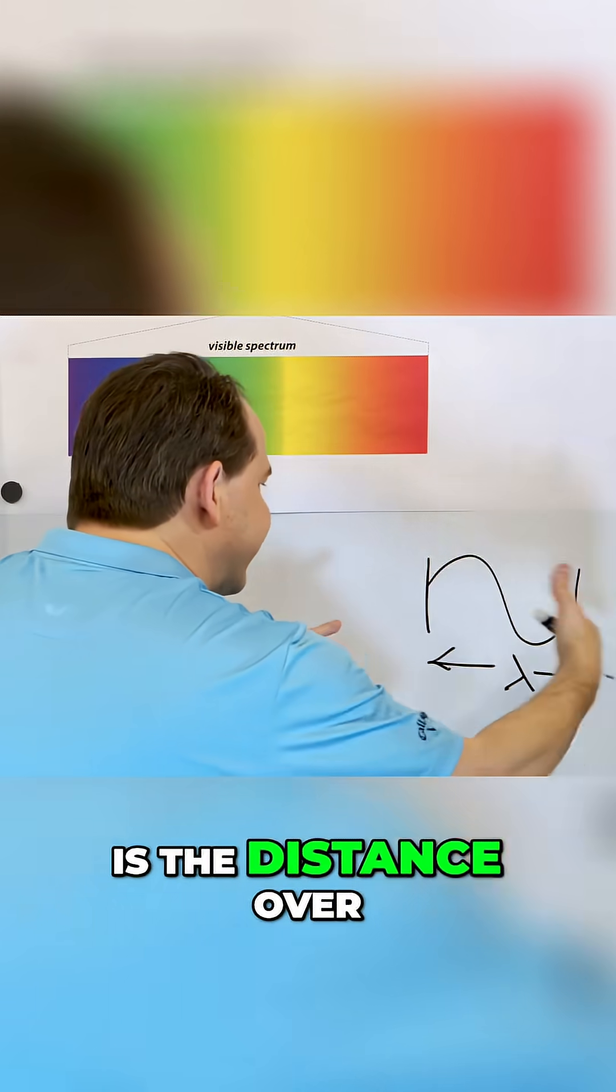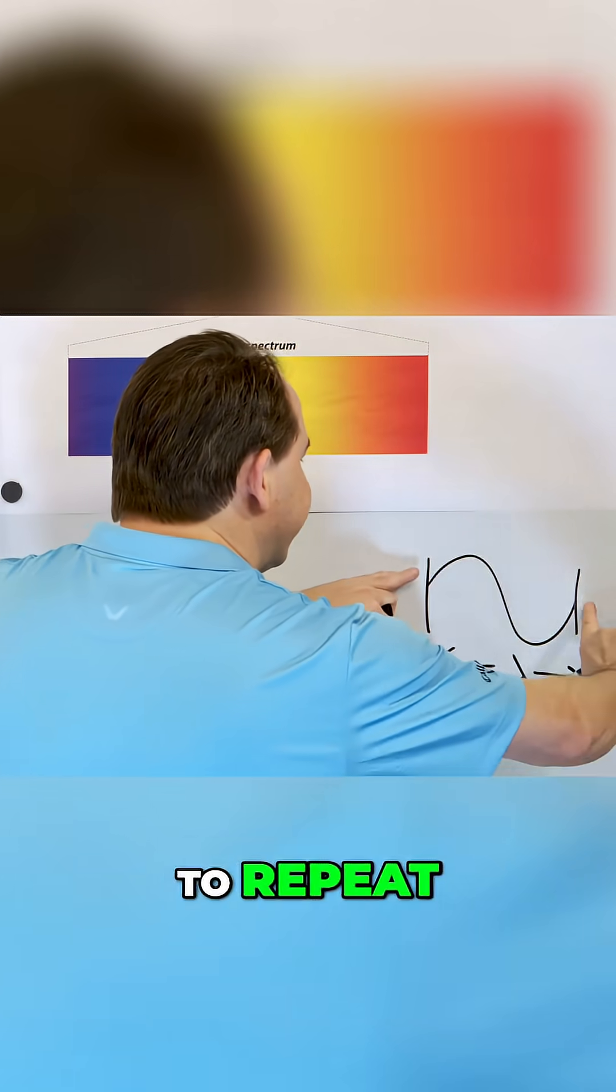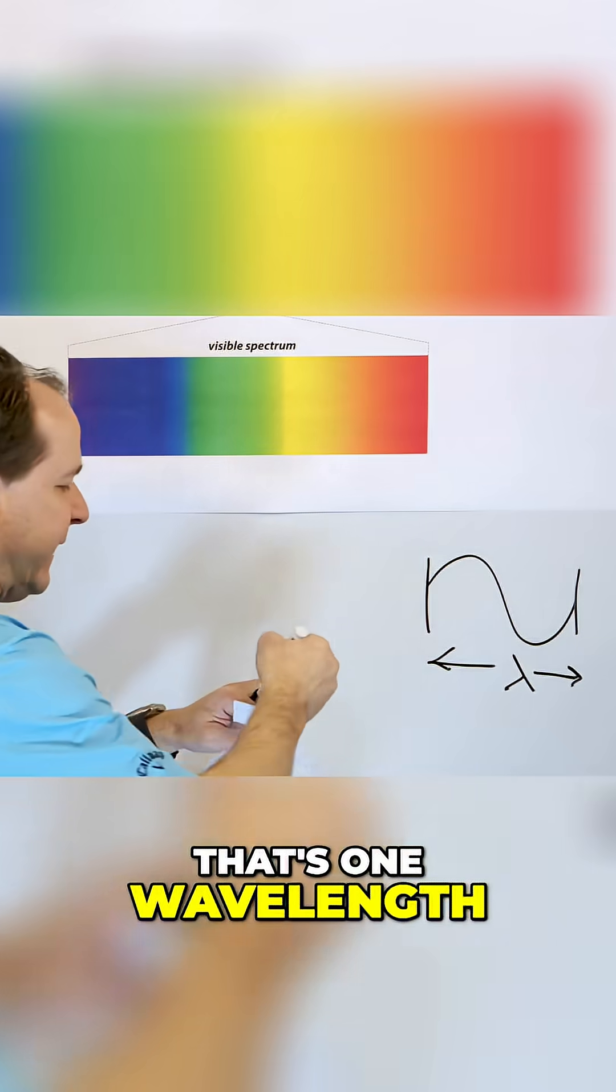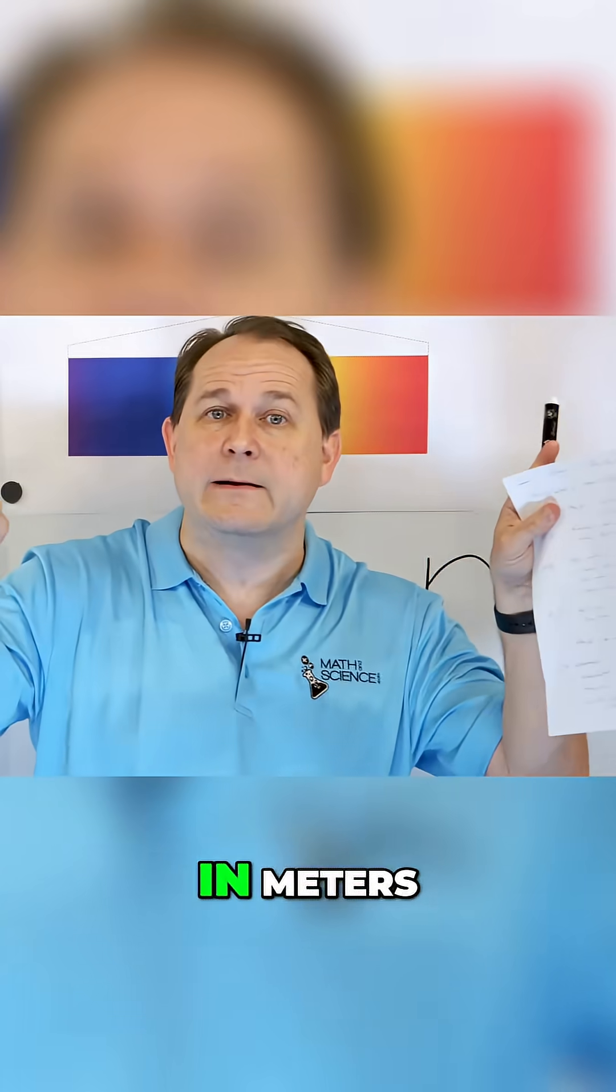is the distance over which a wave begins to repeat. So notice it goes up, down, and it begins to repeat again—that's one wavelength. And it's literally measured in meters.